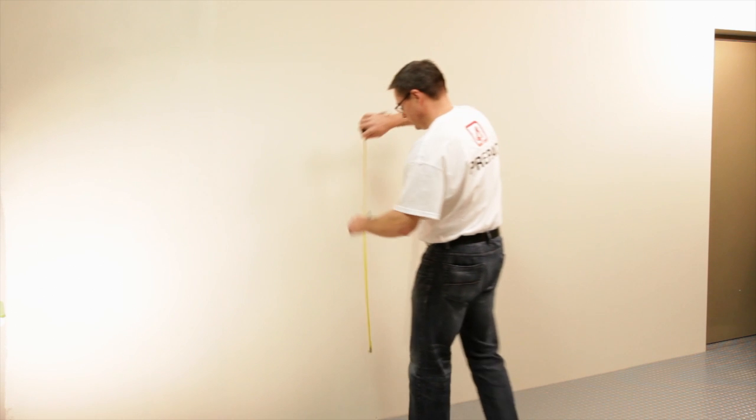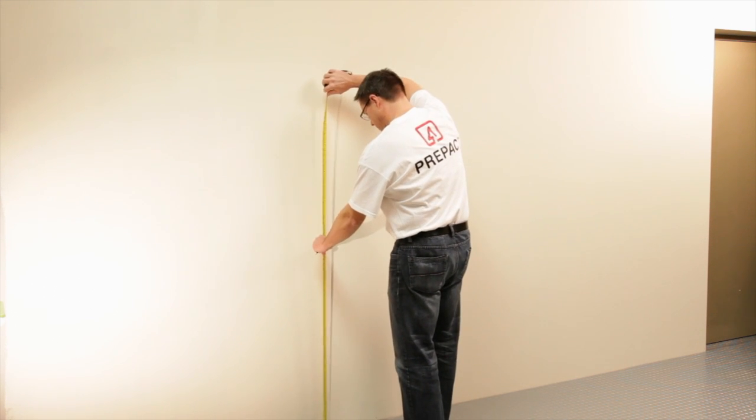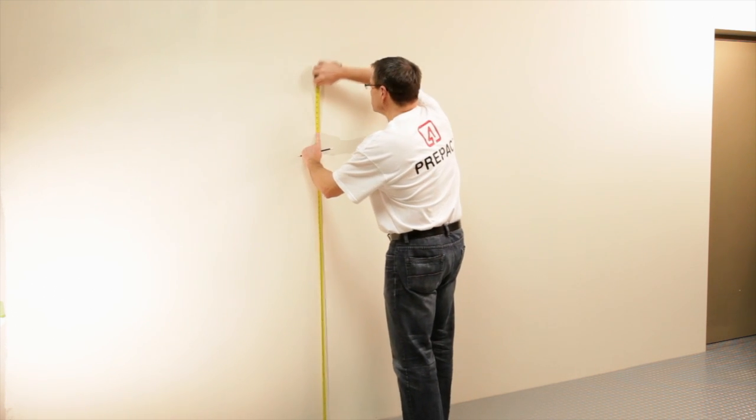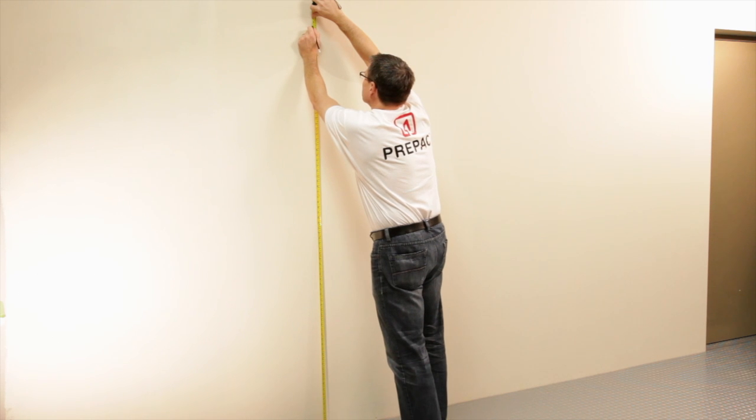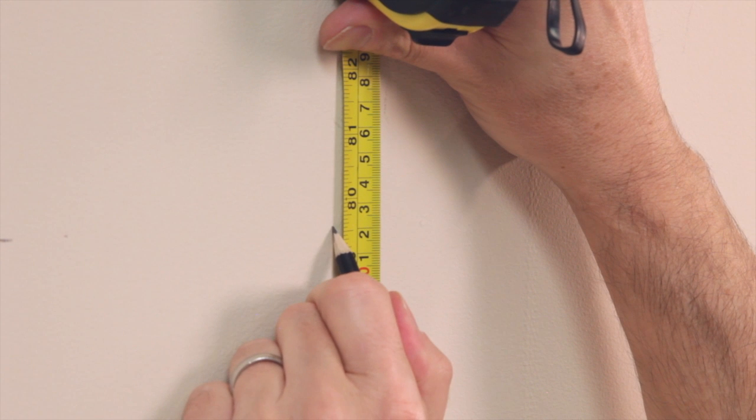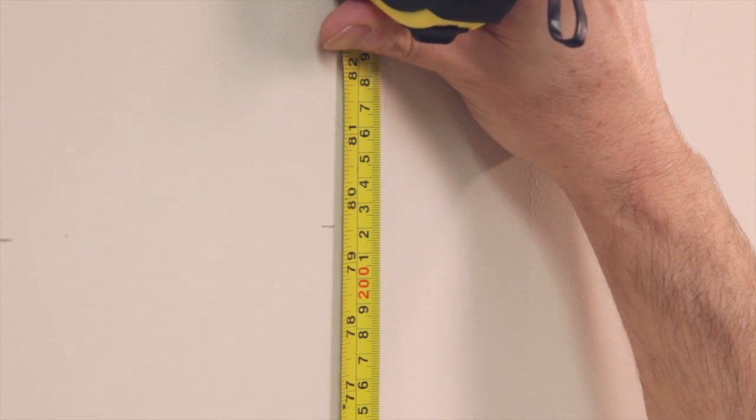Start by hanging the rails for the wall cabinets. In our installation we want the bottom of the tall storage cabinets to be 12 inches from the floor. At multiple locations along the wall, measure 79 and a half inches from the floor and make a mark.